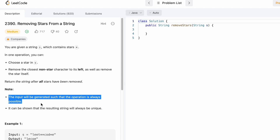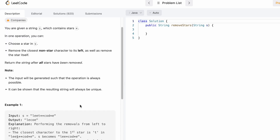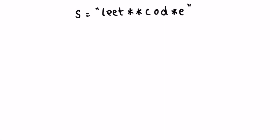Finally, after removing all the stars we have to return the leftover string. It is guaranteed that the operation is possible in the test cases and there will be only one unique answer in the output. Let's take a look at the example — whenever you remove a star you remove its leftmost non-star character as well. We get our final output this way.